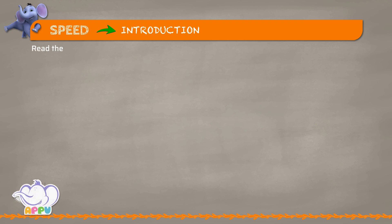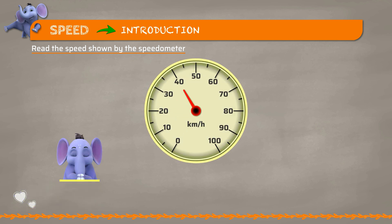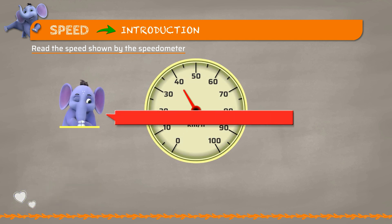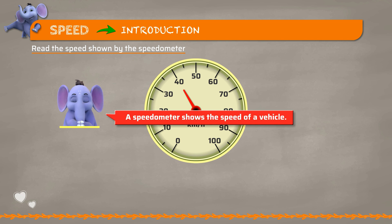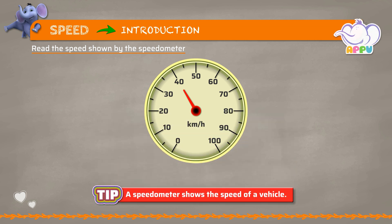Let's read the speed shown by the speedometer. The speedometer shows the speed of a vehicle. The speedometer is pointing to 40, so the speed is 40 kilometers per hour.